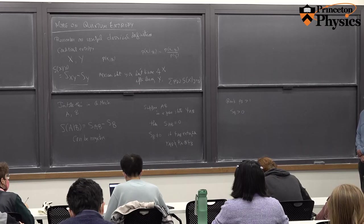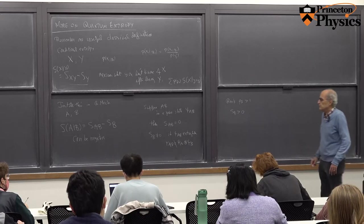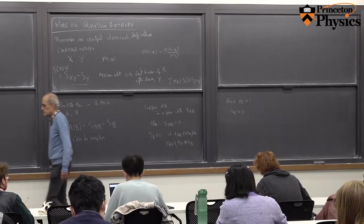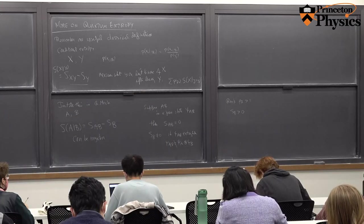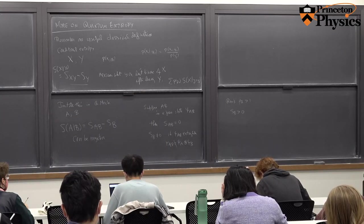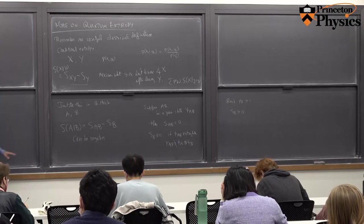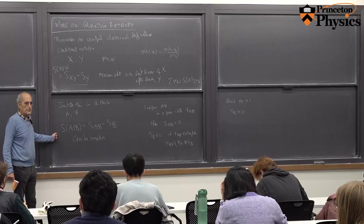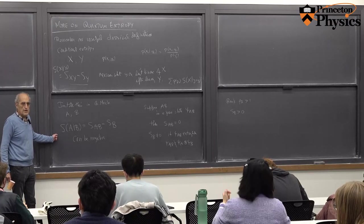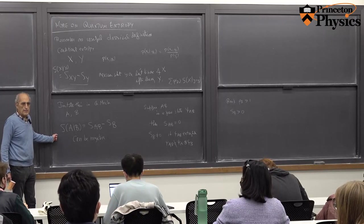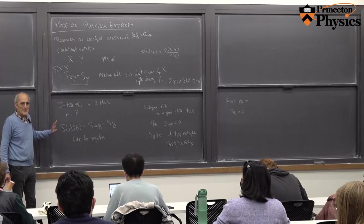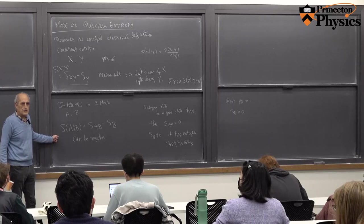This is perhaps the most marked difference between the quantum and classical cases at the elementary level of things we're discussing today. Now, despite this, relative entropy quantum mechanically sometimes behaves similarly to the way it does classically. There's an example of that in the last section of my mini-introduction to information theory article, but we won't have time for it in these lectures.